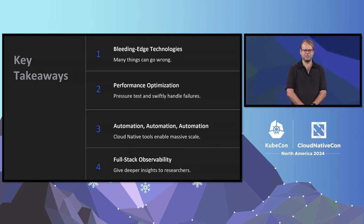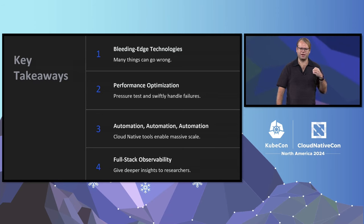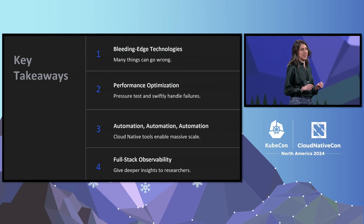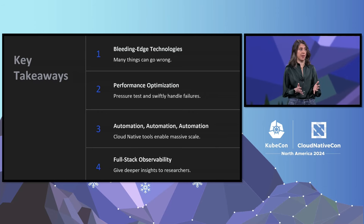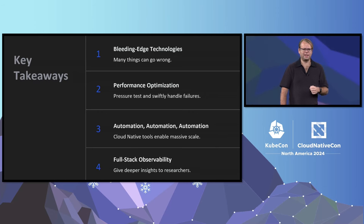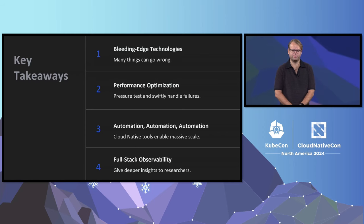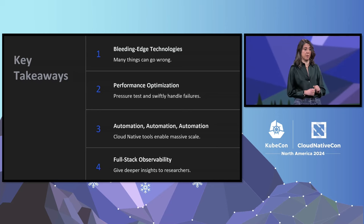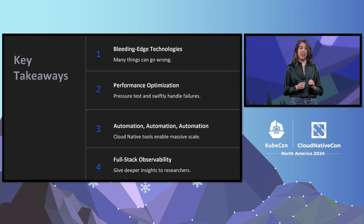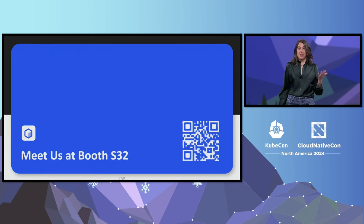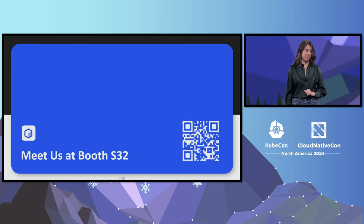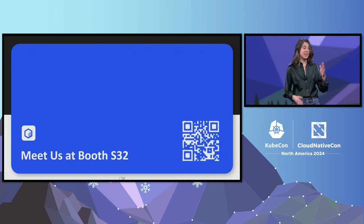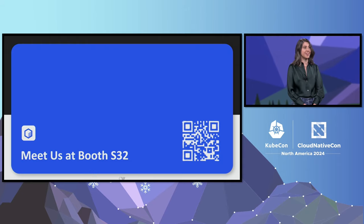What should you remember when leaving this talk? Failures are inevitable — we should not try to prevent them, but learn how to manage them well. We want to push things to the max, get the most out of the system, and swiftly handle issues when they occur. Automation is key, and cloud-native technologies and patterns help us handle the lifecycle of the hardware fleet, including node management and health checks. Efficient fleet management enables full-stack observability, keeping interruptions to an absolute minimum and helping you understand why they happen when they do. Thank you so much — we'd love to continue the conversation at booth S32, and use the QR code to join our upcoming webinar on this topic.